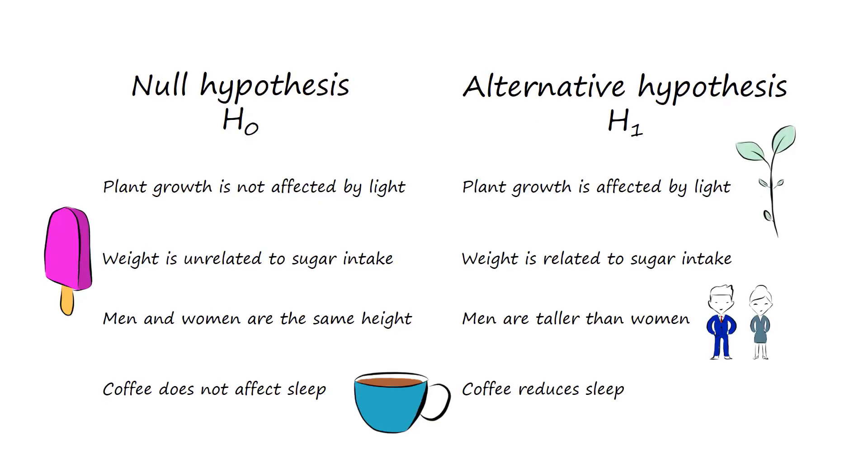Let's explore one-sided and two-sided hypotheses using our examples from earlier. The first alternative hypothesis, plant growth is affected by light. This is a two-sided hypothesis. Light could either increase plant growth or decrease plant growth. We didn't specify.